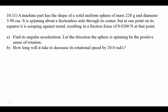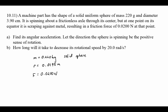Problem 10.11: a solid uniform sphere of mass 220 grams (0.220 kilograms), diameter 3.90 centimeters, so radius is 1.95 centimeters or 0.0195 meters. It's spinning about a frictionless axle through its center, but at one point on its equator it is scraping against metal, resulting in a frictional force F equal to 0.0200 newtons — a retarding force. The torque equals I alpha, and torque equals r cross F.